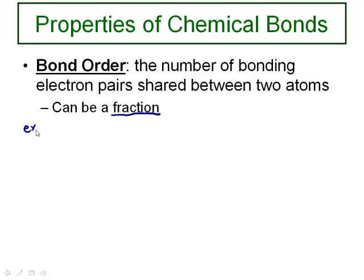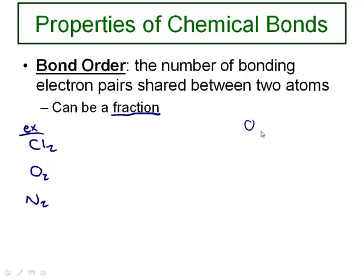Here are a few examples. We're going to look at chlorine Cl2, oxygen, nitrogen, and ozone. If you look at chlorine and draw its Lewis structure, how many pairs of shared electrons do we have between the nuclei? We have one pair of shared electrons. So in this case, the bond order — which I'll abbreviate BO — is one.